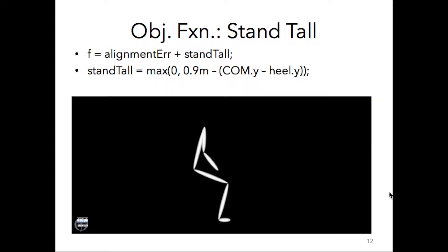In order to avoid this minimum, I included another parameter to define the final standing state, which was a minimum height term. When the difference between the center of mass of the model and the vertical heel position was less than 0.9 meters, the objective function was penalized. On the other hand, as soon as the model reached the minimum height, the term went to 0.